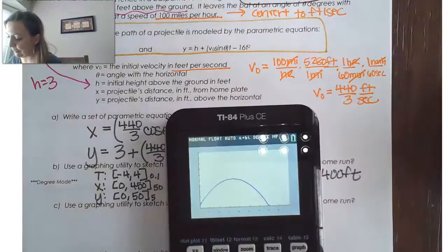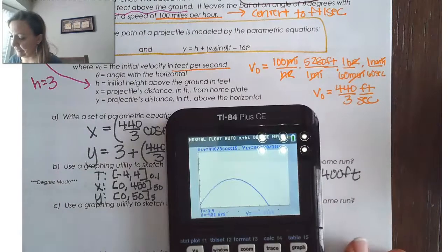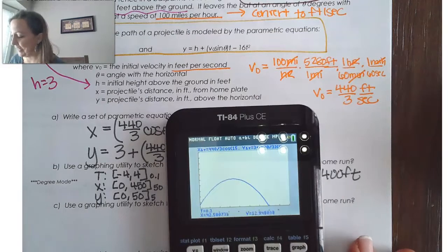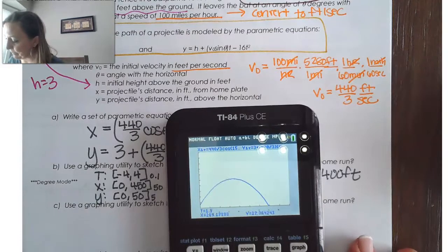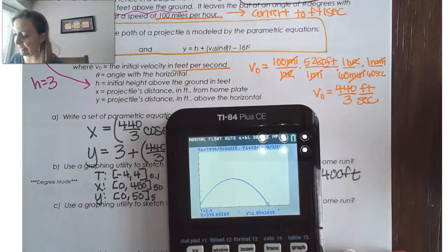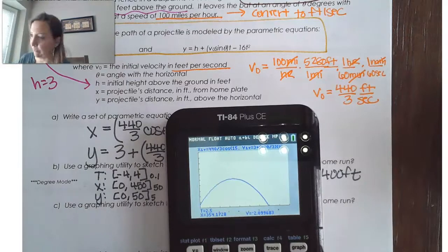And because it never travels 400 feet in that scenario. And if we tried, for example, to trace, it's going to take a while because I started at negative 4. We can see that if I'm tracing over here that the x gets to 340 and then not so much there.